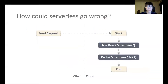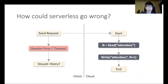Check this example. Suppose conference organizers want to count the number of attendees who want to have lunch at a venue, and they want to build it using Serverless. The program is simple: when it receives a new request, it reads the current value of attendees from the database, increases it by one, and writes it back. Even in this simple example, problems may occur. If the user receives an error or the request times out, they don't know whether they should retry, because they don't know when the program crashed. If it crashed after the write and the client or cloud provider retries, the number of attendees will be counted incorrectly — they may end up serving more people than expected and costing more money.